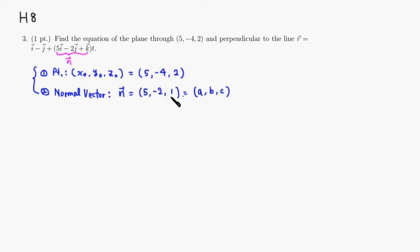Once you have those two pieces of information, the equation of the plane looks like this: A times quantity x minus x zero plus B times quantity y minus y zero plus C times z minus z zero is equal to zero.